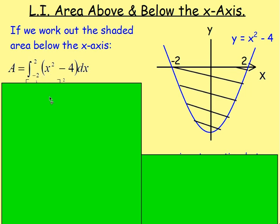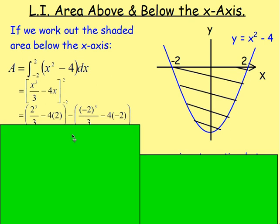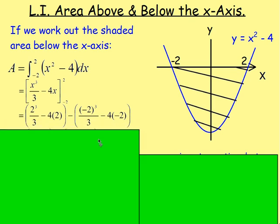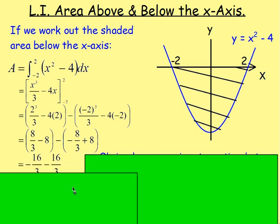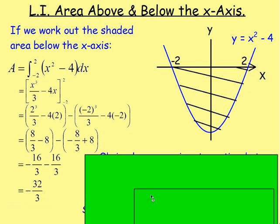Integrating that, integrate x squared, we would end up with x cubed over 3. Integrate the negative 4, we get negative 4x. Sub in the limits! If you're unsure about that, look back to the last lesson. If you simplify it slightly, simplify it again, we end up getting down to negative 32 over 3.